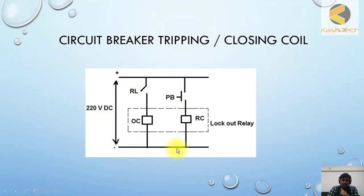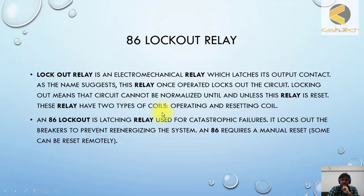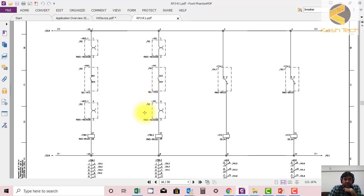These are the contacts of the lockout that you can use at various positions. This is the simplest diagram of a lockout: when you want to operate it, this contact will operate and it will operate the lockout. When you want to reset the lockout, there is a push button — when you press it, the lockout will be reset. This is the way lockouts are used.